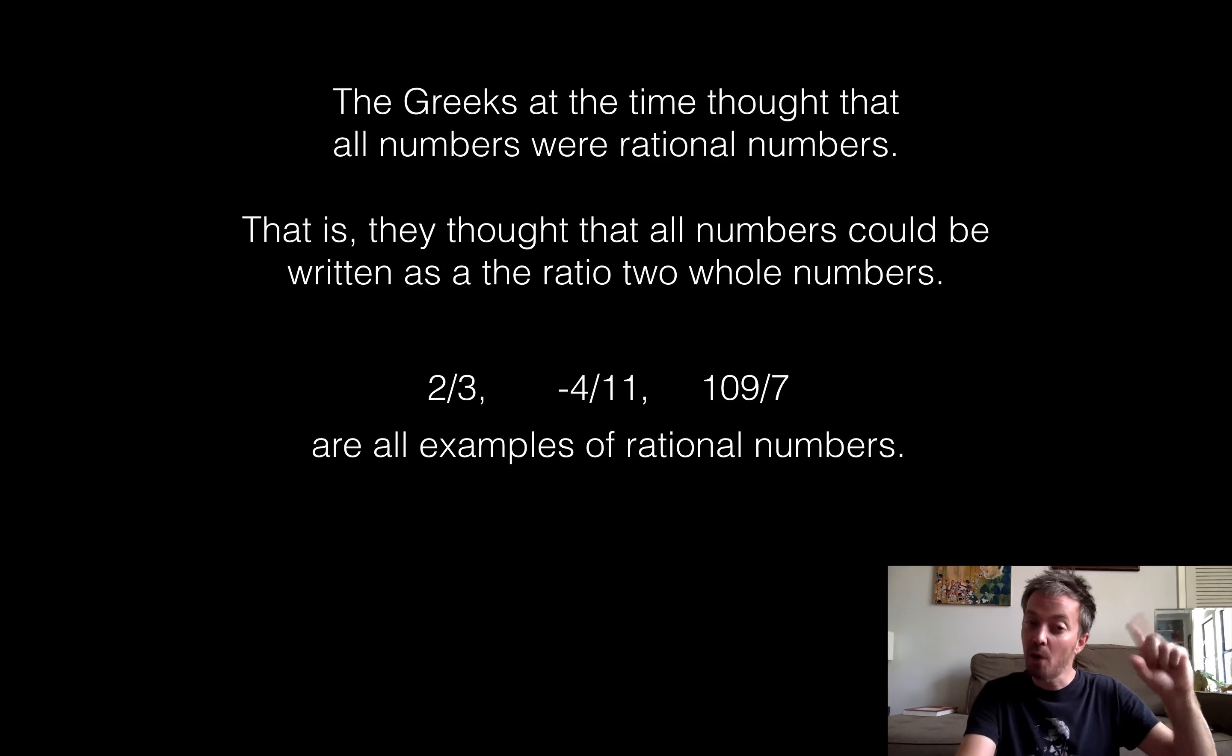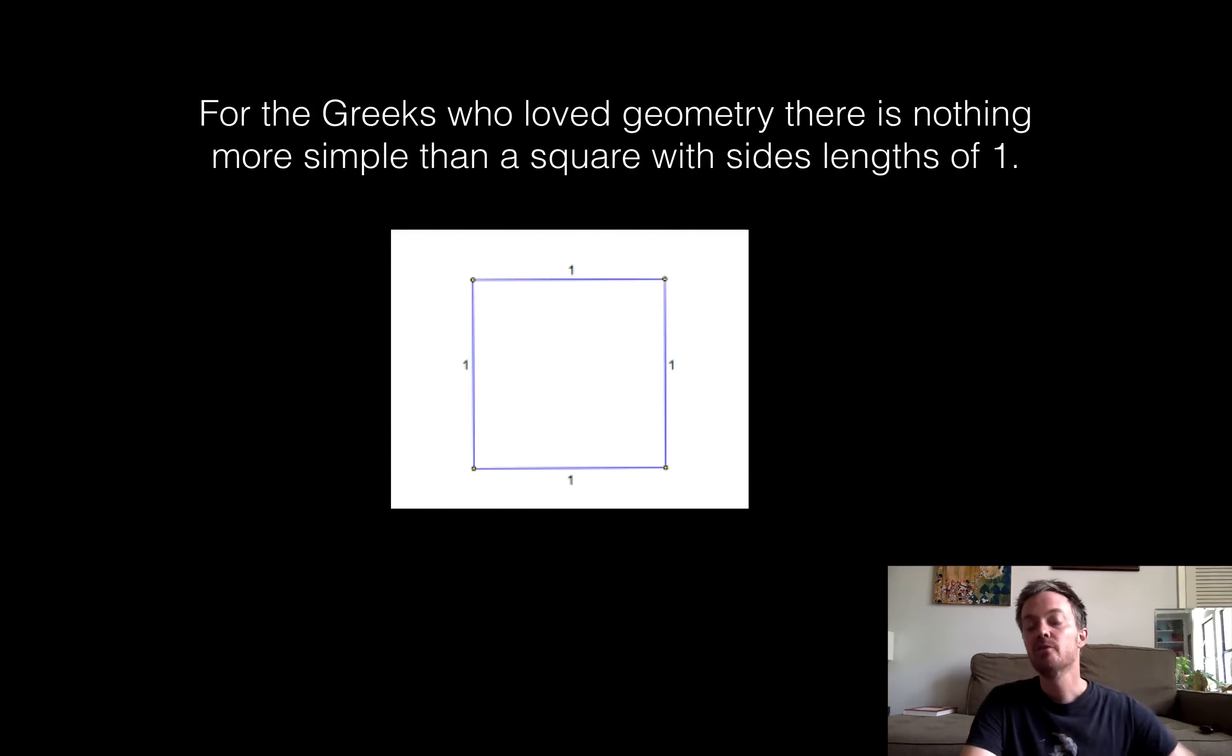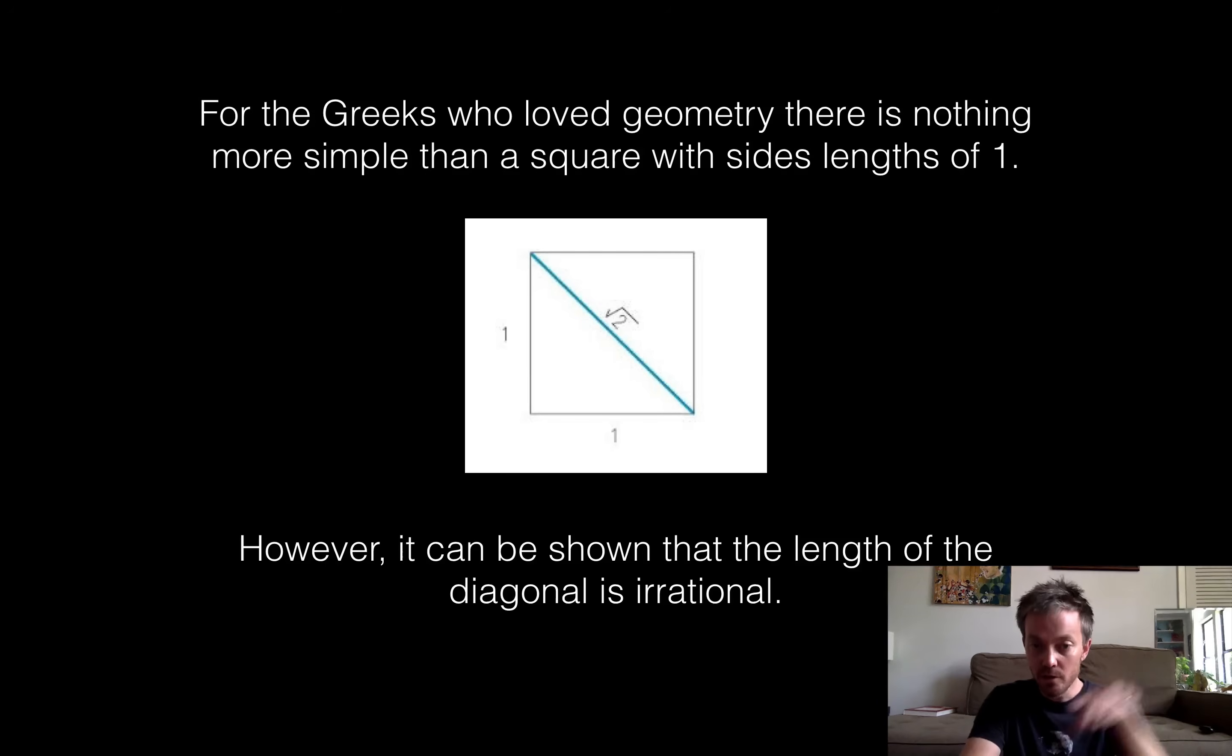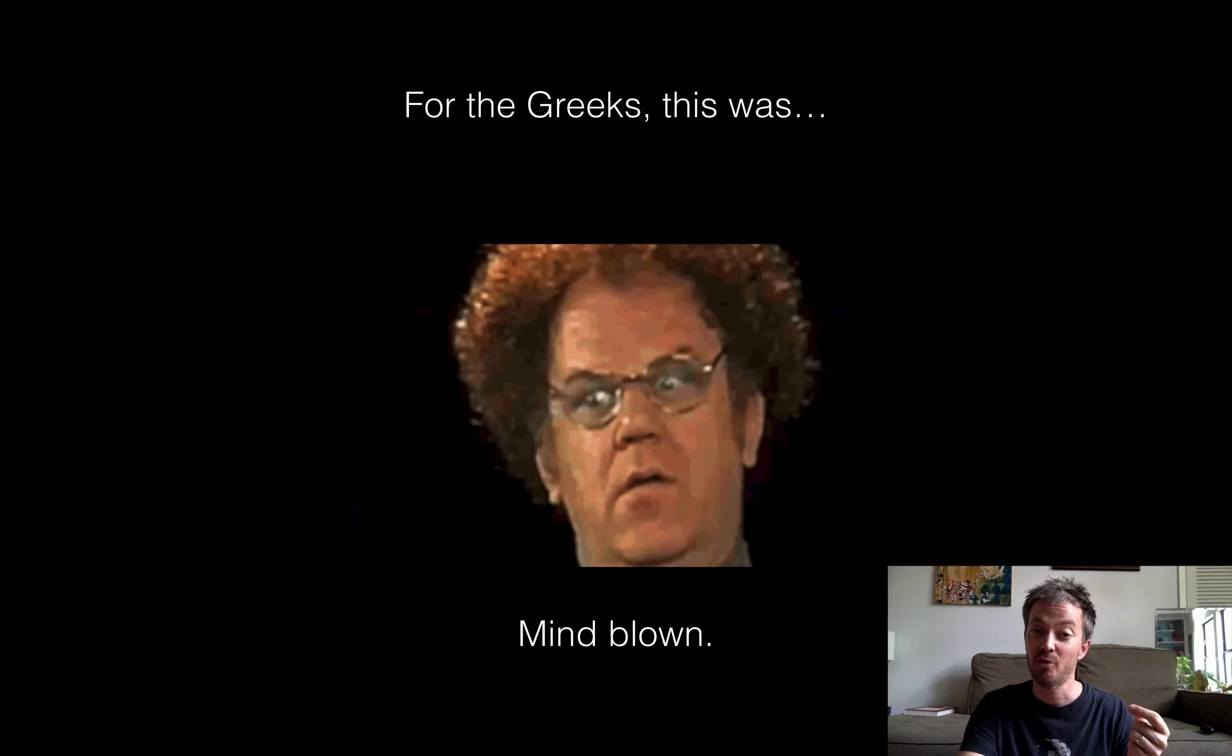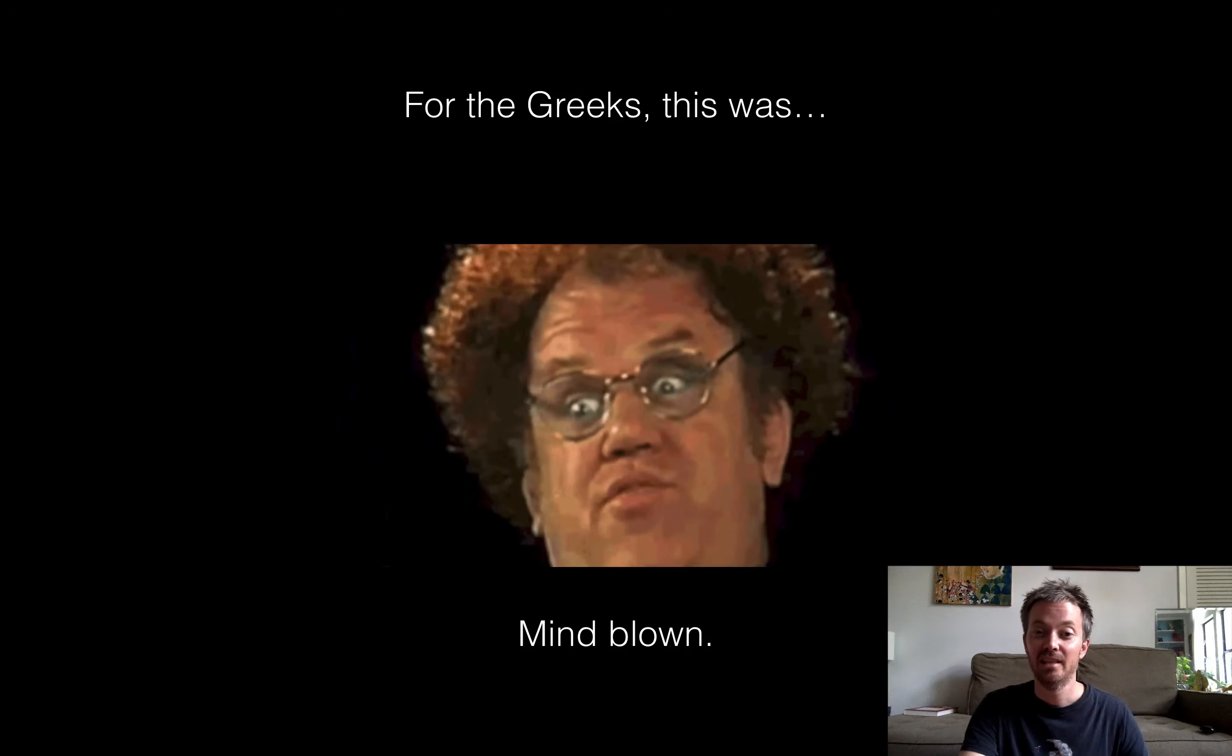They knew numbers that would get them close, but not exact. So the Greeks were lovers of geometry. So what could be more simple than having a square with side lengths one? Well, it turns out that the length of that diagonal, which we say is square root of two, and you can compute that using the Pythagorean theorem, it turns out that square root of two is irrational. And that's what Hippasus showed. And that would actually probably make an interesting video at another time, but he showed that the square root of two was actually irrational. And for the Greeks, this was mind blowing.